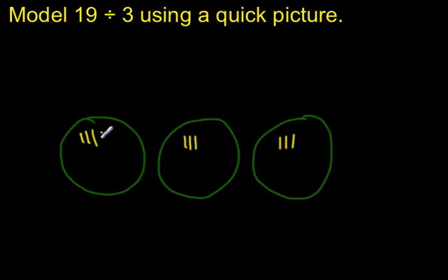Each group has 3. 10, 11, 12, 13, 14, 15. I'm getting closer to 19. I want to slow down a little bit.